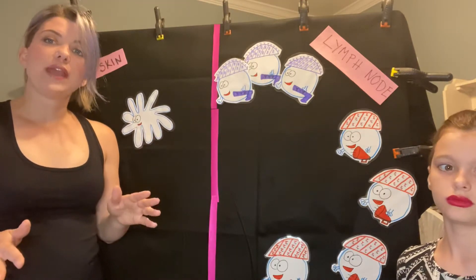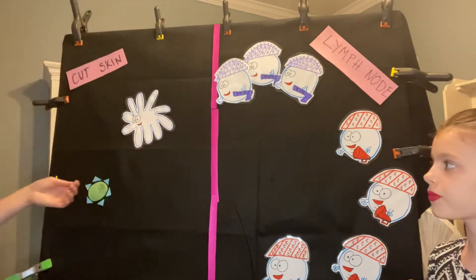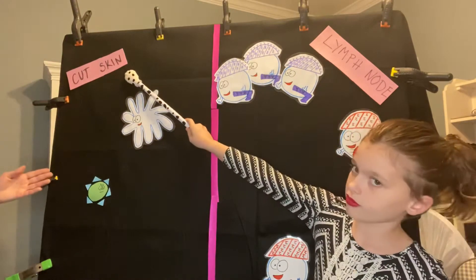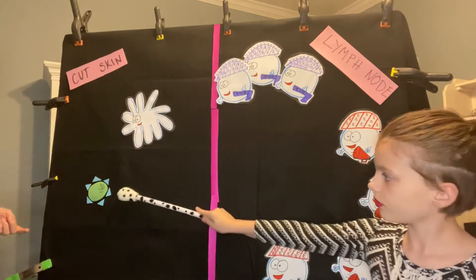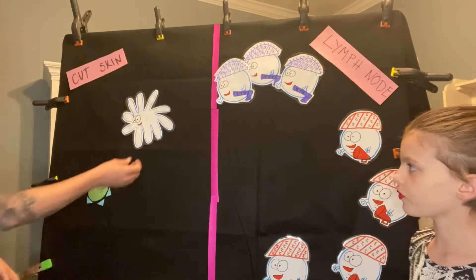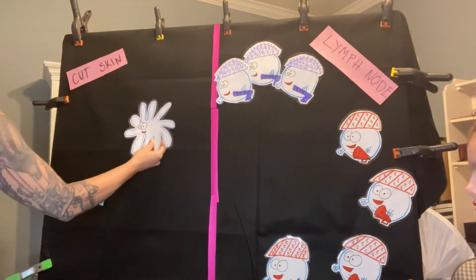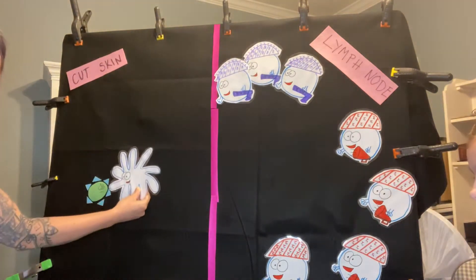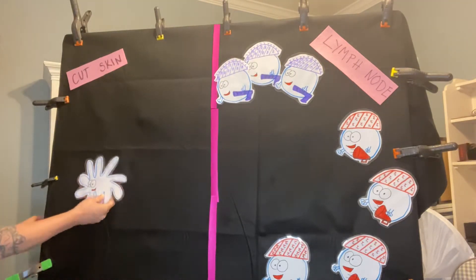We're going to do our example where somebody gets a cut in their skin. In the cut skin, sometimes a bacteria can enter. When a bacteria enters our skin, our dendritic cell would go and he's going to recognize this foreign bacteria and he's going to eat it.